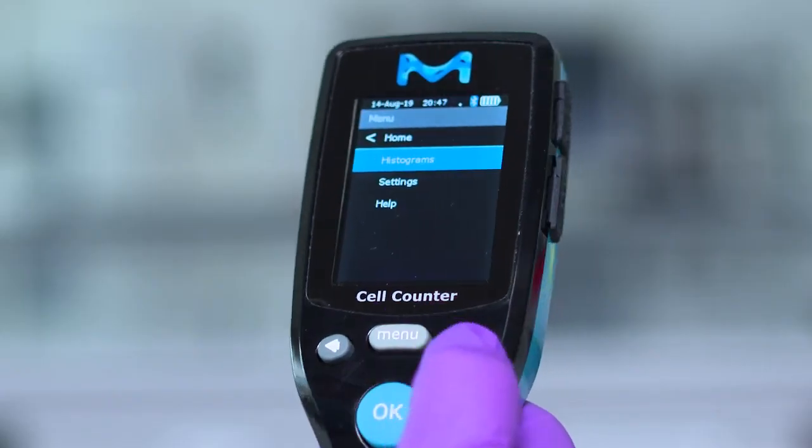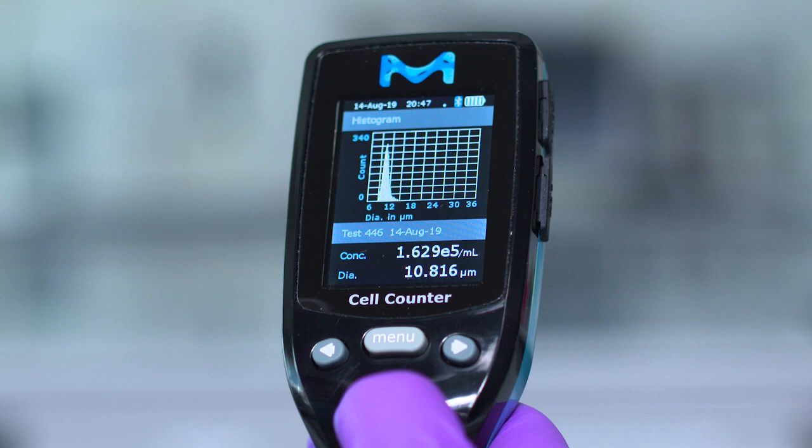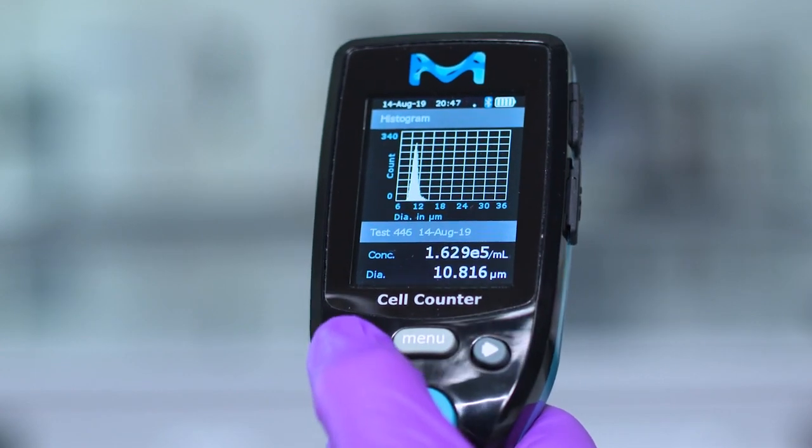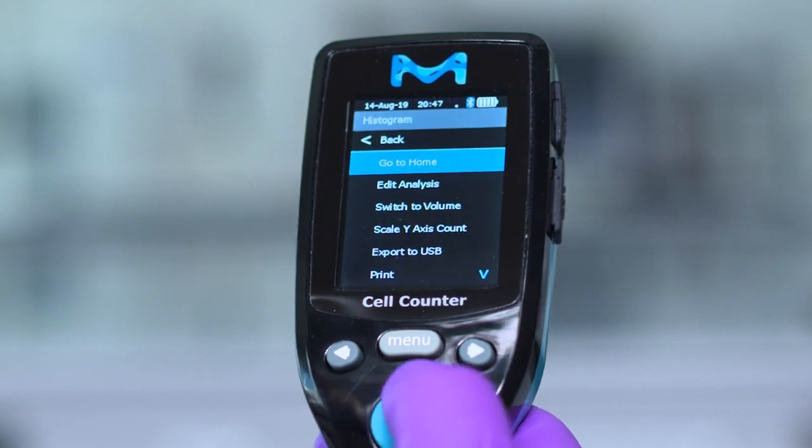The other way is to scroll to the desired histogram, select menu, histograms, and OK. Scroll to desired histogram using left and right arrows. Press OK for edit analysis.